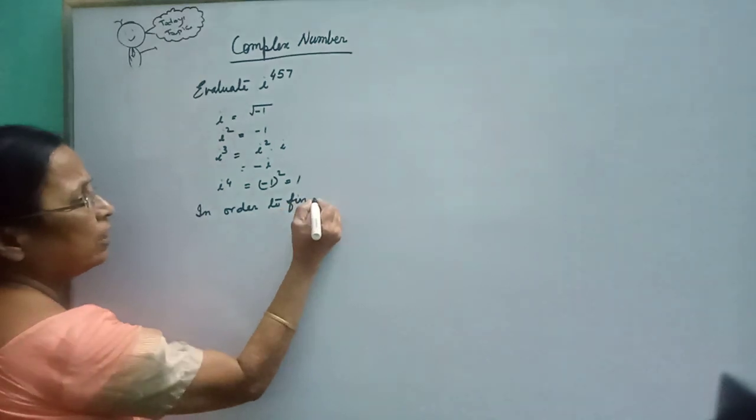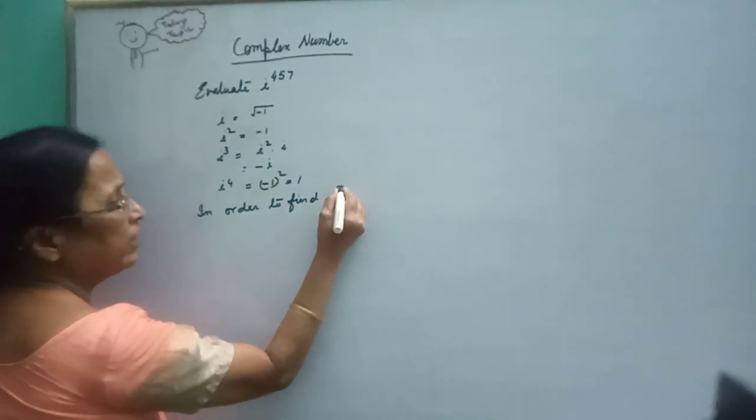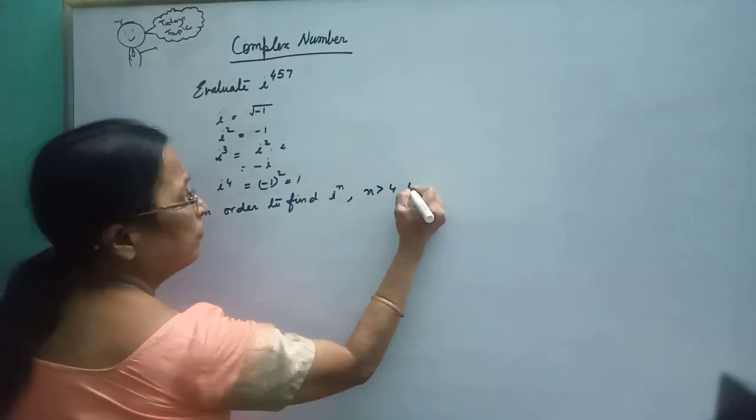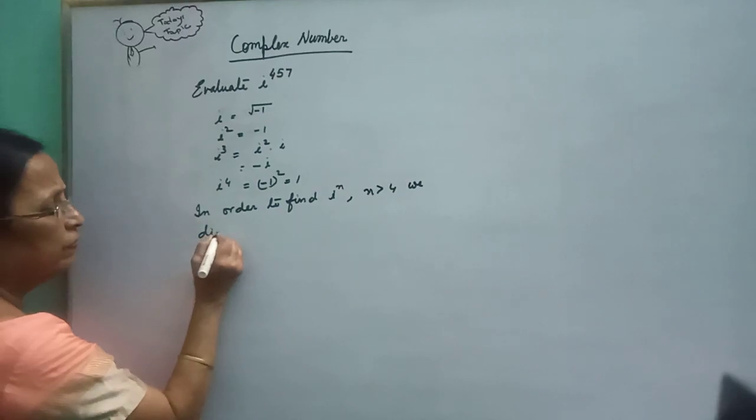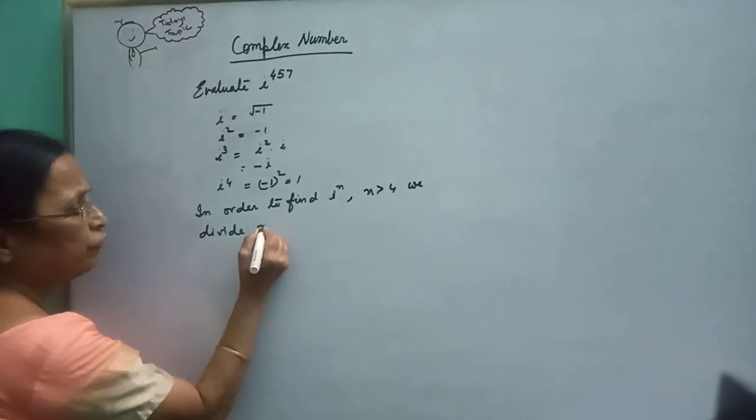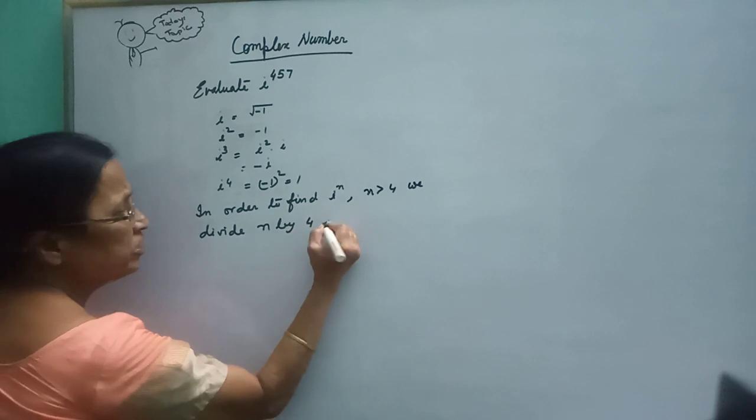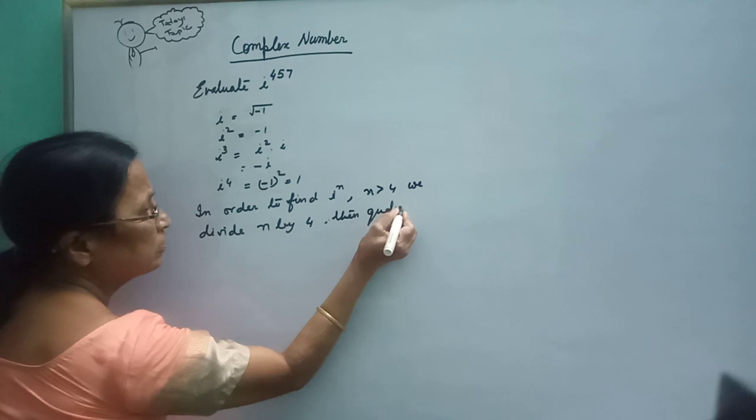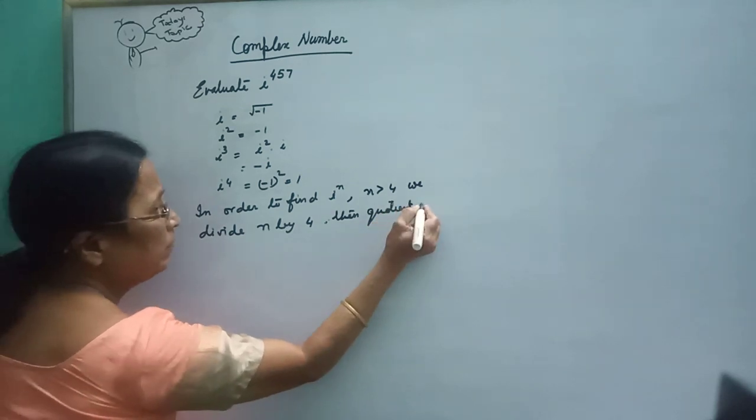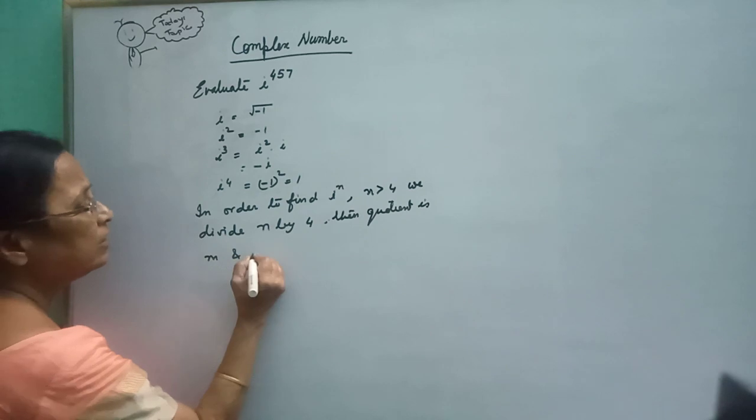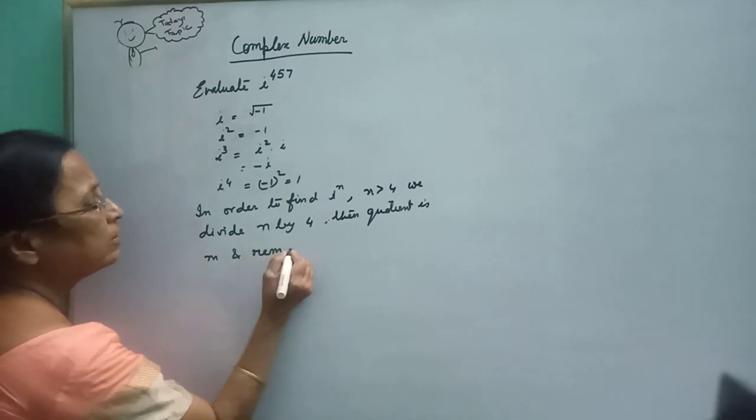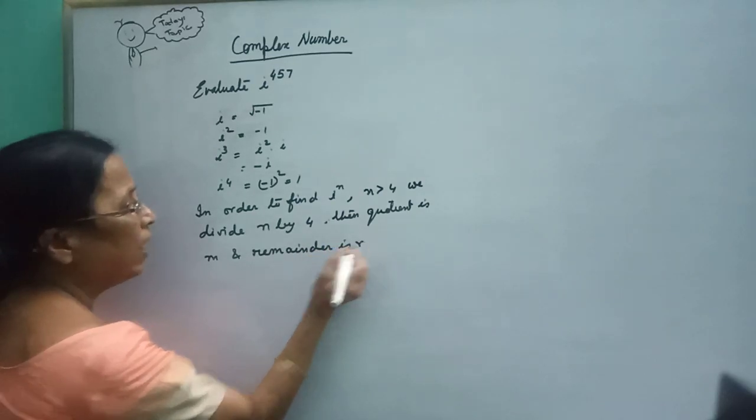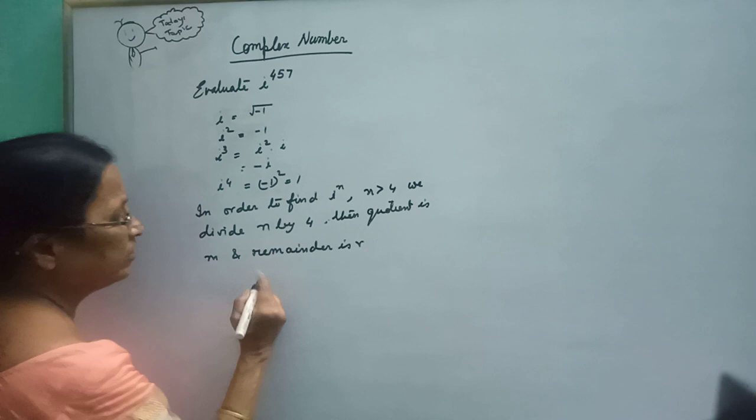Now in order to find i to the power n when n is greater than 4, we divide n by 4. Then quotient is m and remainder is r.